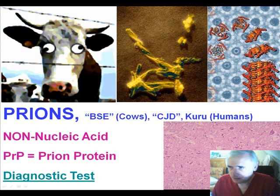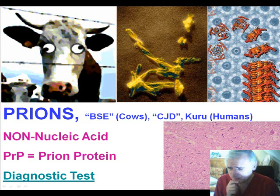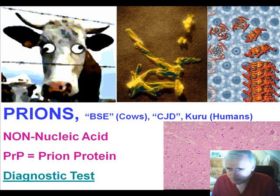Prions are protein particles. You can see here an exact chemical structure in the diagram, and here's a scanning electron microscope image. They have a very specific structure and somehow can replicate and infect, causing sometimes fatal diseases in humans. Another human disease was called Kuru — when certain tribes were cannibalizing one another, they noticed a wasting disease followed by central nervous system symptoms and death.